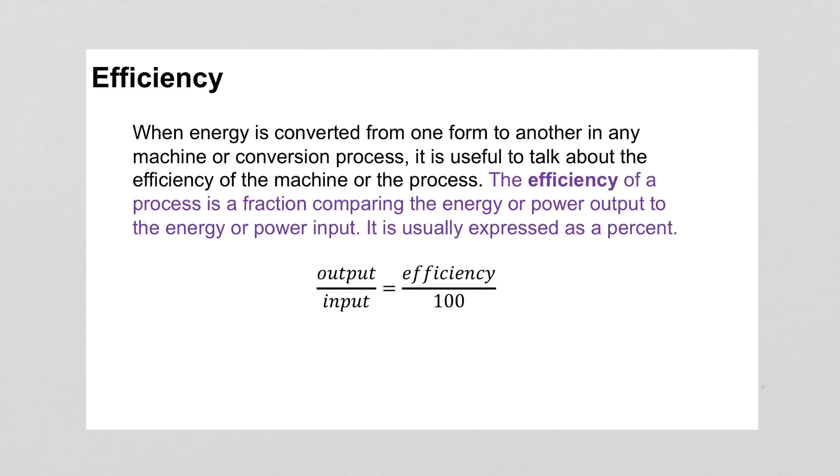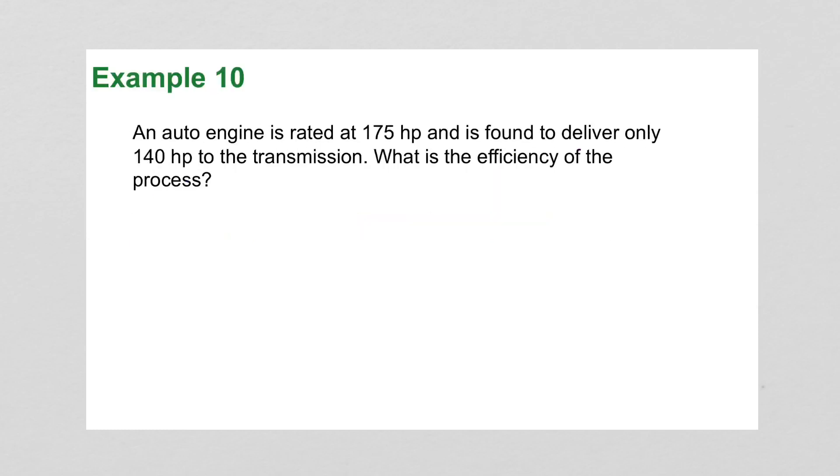Efficiency. When energy is converted from one form to another in any machine or conversion process, the efficiency of a process is a fraction comparing the energy or power output to the energy or power input. And so we say output over input equals the efficiency over 100.